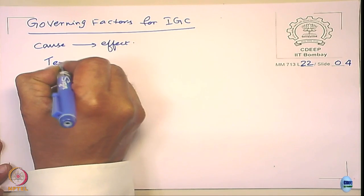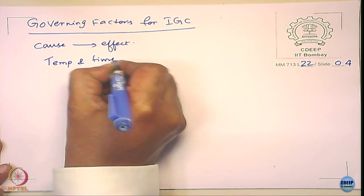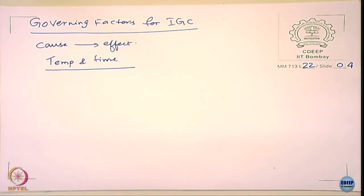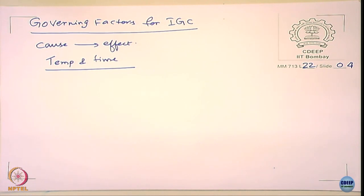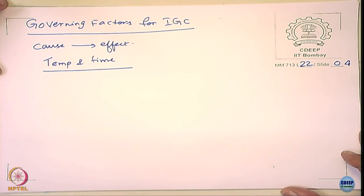Can we quantify and understand intergranular corrosion in more detail? As I mentioned, both temperature and time are important. Before going into detail — how many of you are from a non-metallurgy background? Quite a few. Have you heard of time-temperature-transformation diagrams, the so-called TTT diagrams? Let me briefly cover this aspect so that you get a real feel for it.